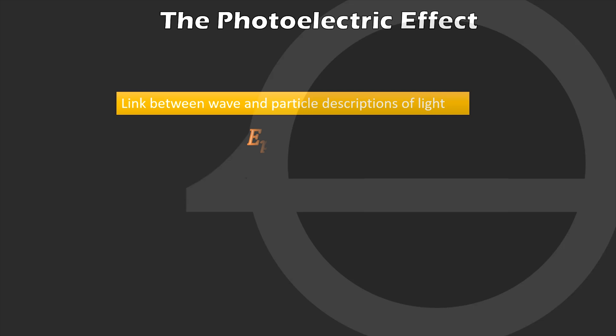The fact that light can interfere with itself, as in the Michelson interferometer or Young's double-slit experiment, is compelling evidence that light has wave properties. Nevertheless, the photoelectric effect illustrates that light also has particle properties. Einstein's energy relation, E equals h nu, provides the link between these apparently conflicting descriptions of light by relating the energy of the photon to the frequency of the wave.